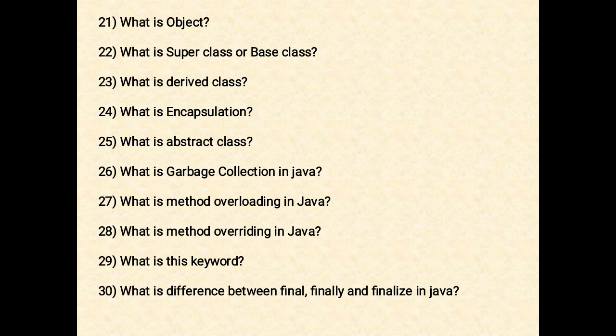The next question: what is method overriding in Java? If a subclass has the same method as declared in the parent class, it is known as method overriding in Java. In other words, if a subclass provides a specific implementation of a method that has been provided by one of its parent classes, it is known as method overriding.